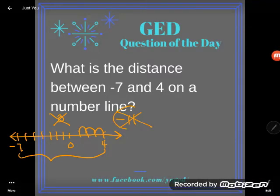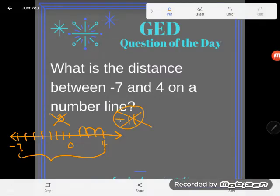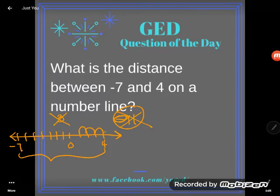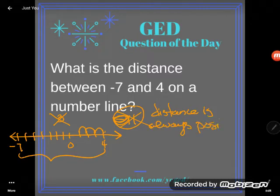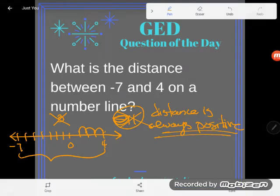The problem with negative 11 is different. Negative 11 is an issue because it's negative. Distance is never negative — distance is always positive. I can't stress that enough, and the GED is generally trying to trick you on that. So watch out: distance is always positive.